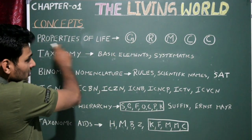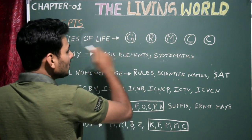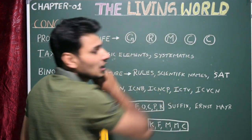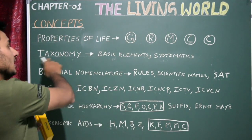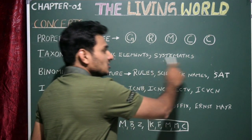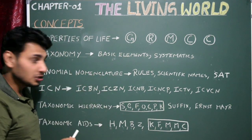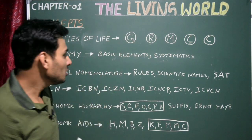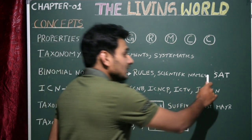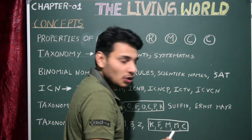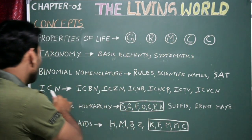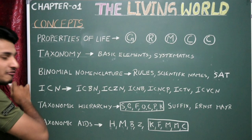Let us see the concepts first. Properties of life — here you are going to learn about growth, reproduction, metabolism, consciousness, and cellular organization. Then taxonomy — the four basic elements of taxonomy. Then systematics. Next, binomial nomenclature — the universal rules of binomial nomenclature, scientific names of different organisms.